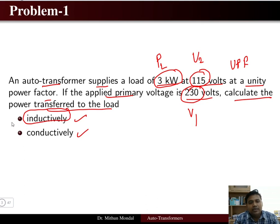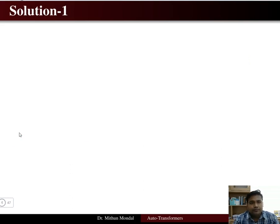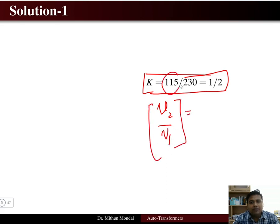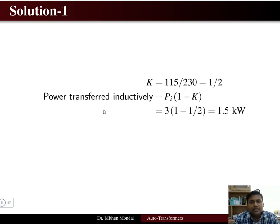In a two winding transformer, power is transferred only inductively. However, in an auto transformer, power is transferred both inductively as well as conductively. For the solution, we first obtain the transformation ratio: k = V2/V1 = 115/230 = 0.5.